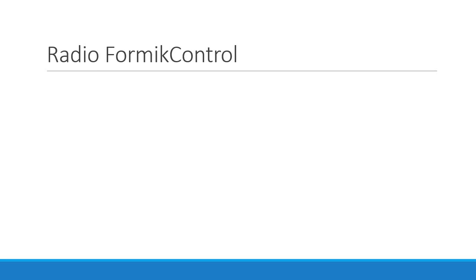Welcome back everyone. In this video we are going to build our fourth Formik control which is the radio buttons component. To implement a group of radio buttons we need to use the render props pattern for the field component. It is not as straightforward as the previous three components, but at the same time it's not difficult either. If you have gone through the earlier videos in the series it should be straightforward to understand how this component works.